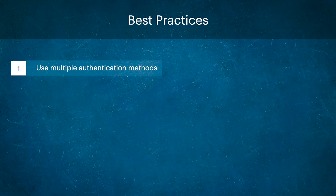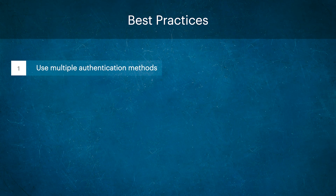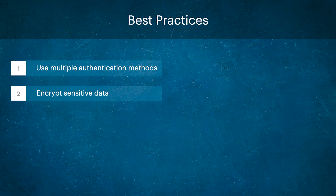First, use multiple authentication methods to provide an added layer of security. For example, you could use a combination of biometric authentication and security tokens — this way, even if one method is compromised, the attacker would still need to bypass the other to gain access. Second, encrypt sensitive data — biometric templates and security tokens should be encrypted both in transit and at rest, so that even if the data is intercepted or stolen, it will be difficult for an attacker to access it.